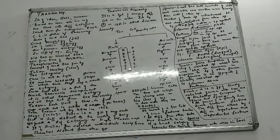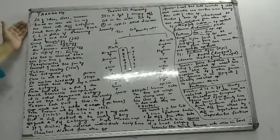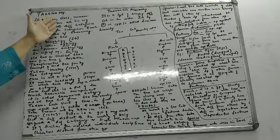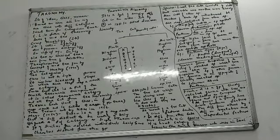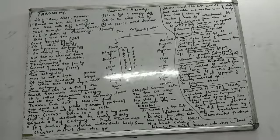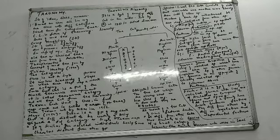Please do not change the sequence when you give the definition, because obviously nomenclature cannot come before identification. First you will identify something, then you will put it into groups, and then a name will be given to it according to the group it has. Remember: the sequence should not change — identification, classification, and nomenclature.